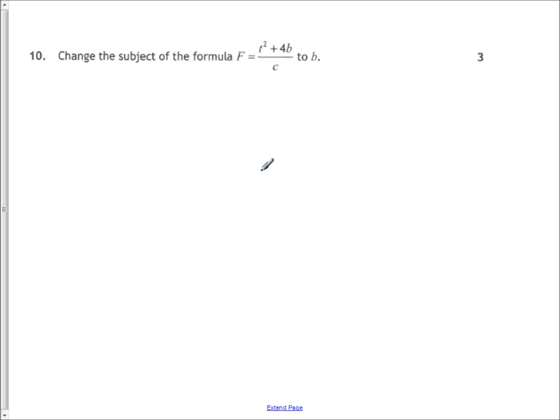Change in subject. Straightforward enough. Nice and easy. Multiply both sides by C. Take away T squared. Divide by 4. Three marks. Move on.